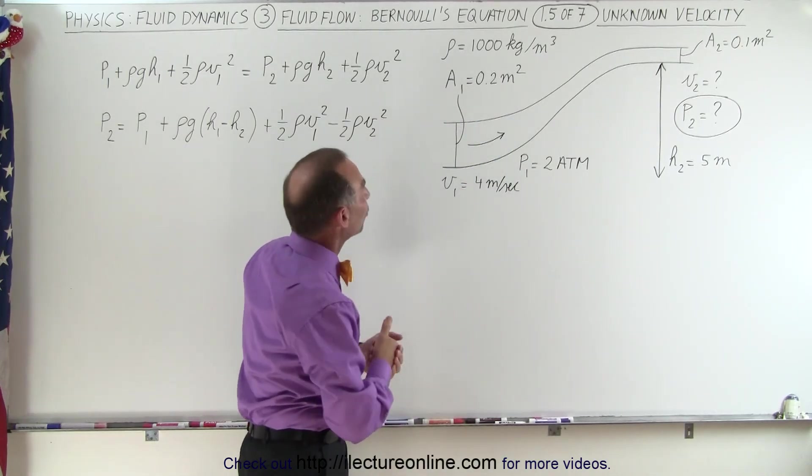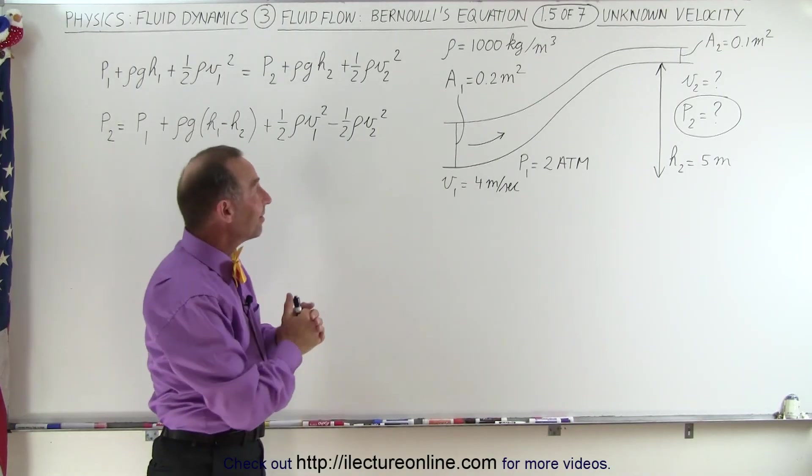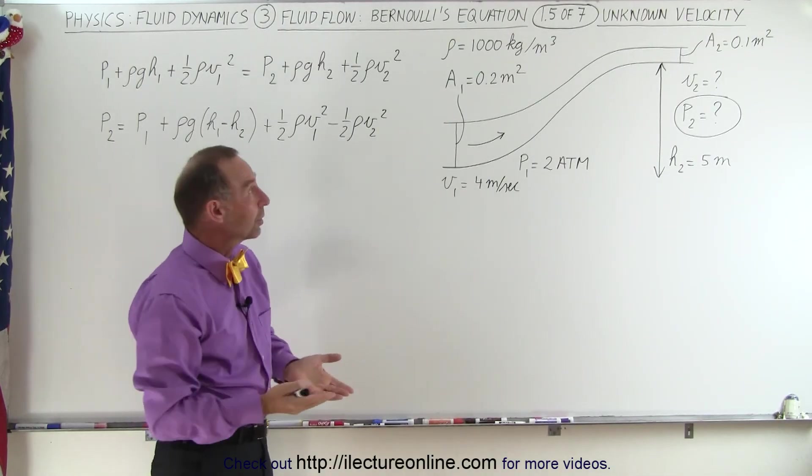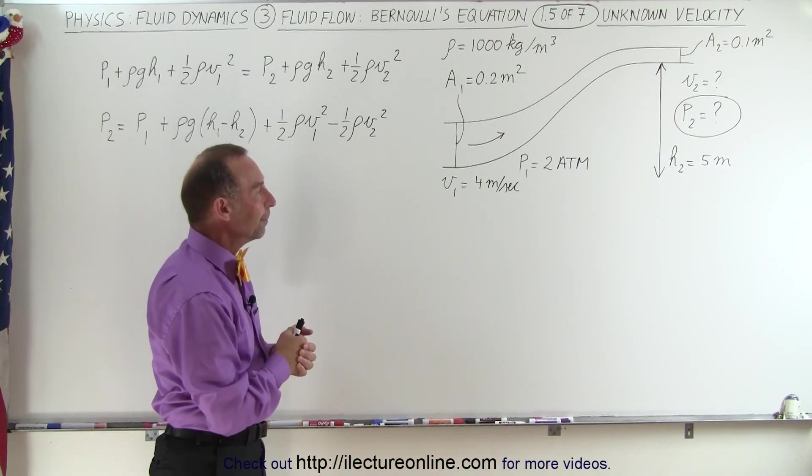The cross-sectional area is 0.2 meters squared. Now the density of the fluid, let's assume it's water, can be taken to be a thousand kilograms per cubic meter.